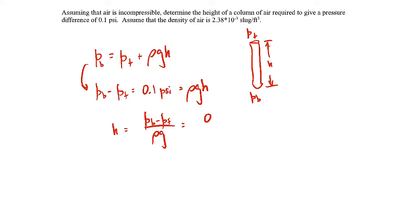We plug in our numbers. 0.1 pounds per square inch, which would be like pounds force per square inch. The density is 2.38 times 10 to the minus 3 slugs per cubic feet. Gotta love those imperial or English units. And g is 32.2 feet per second squared.